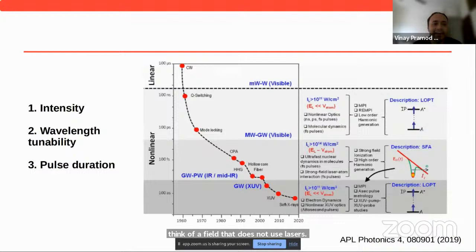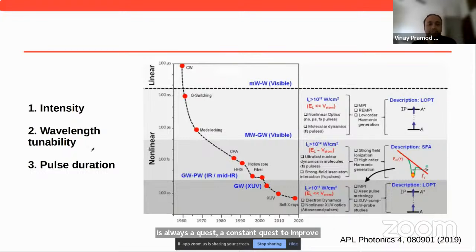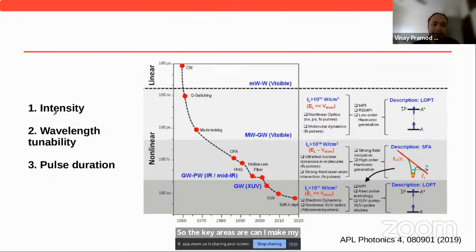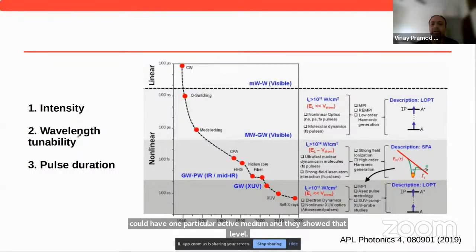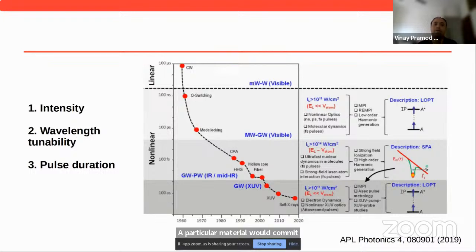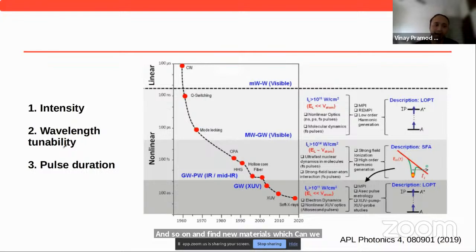Since the inception of building lasers, there has been a constant quest to improve. Key areas include: can I make my laser stronger and more intense? Can I have wavelength tunability? A particular material emits at a particular frequency, so can I find new materials to build lasers with a wider wavelength tunability? And can I make these lasers emit shorter and shorter pulses of light? I've already motivated why we'd need an attosecond light source — it could revolutionize chemistry and biology.